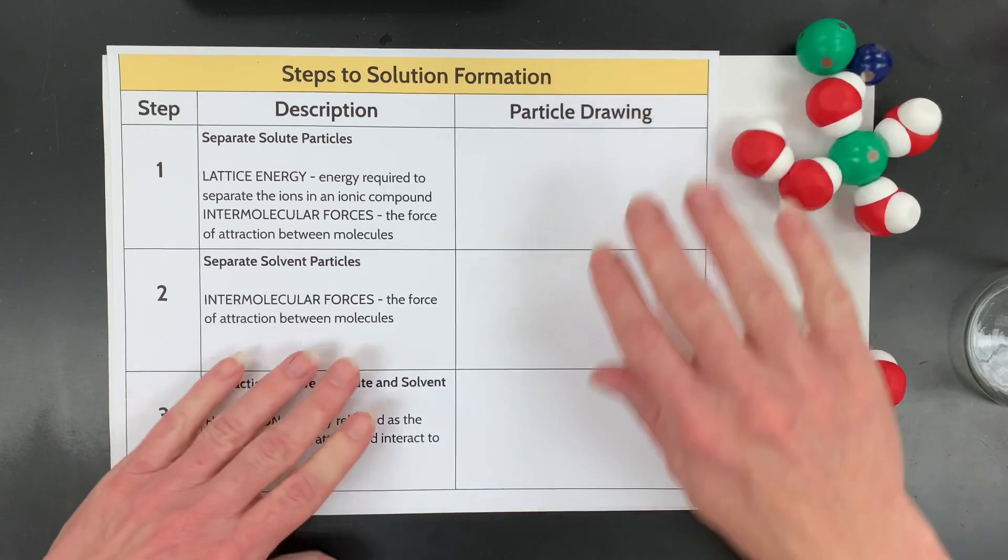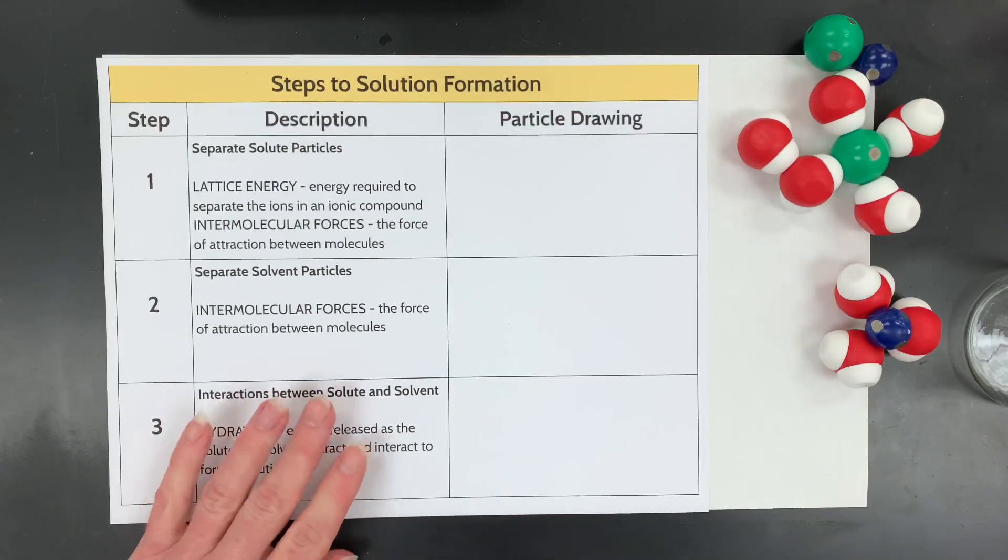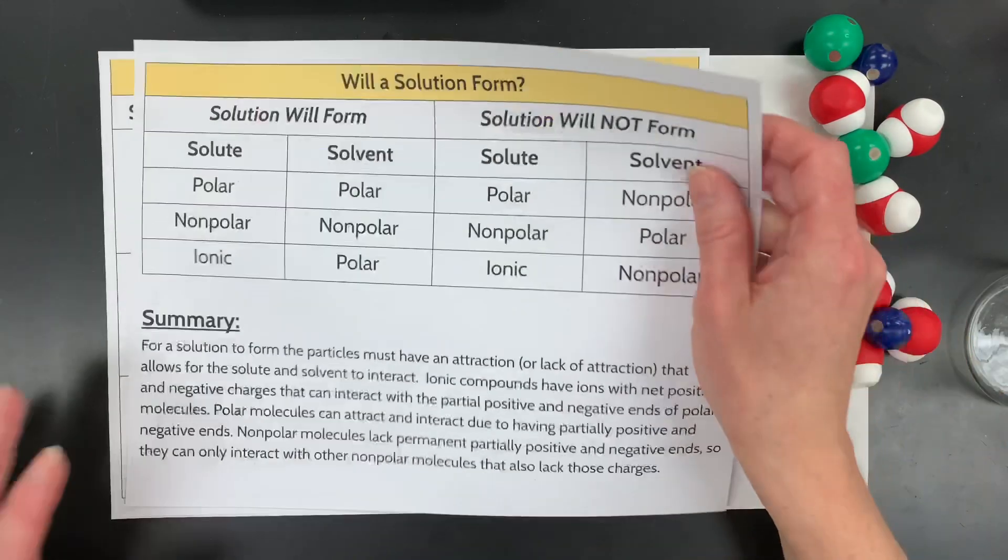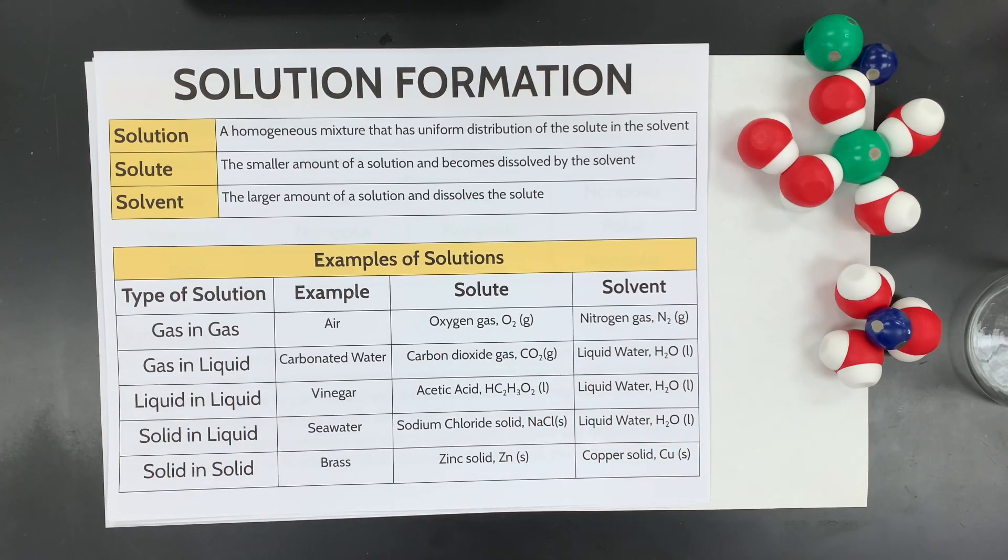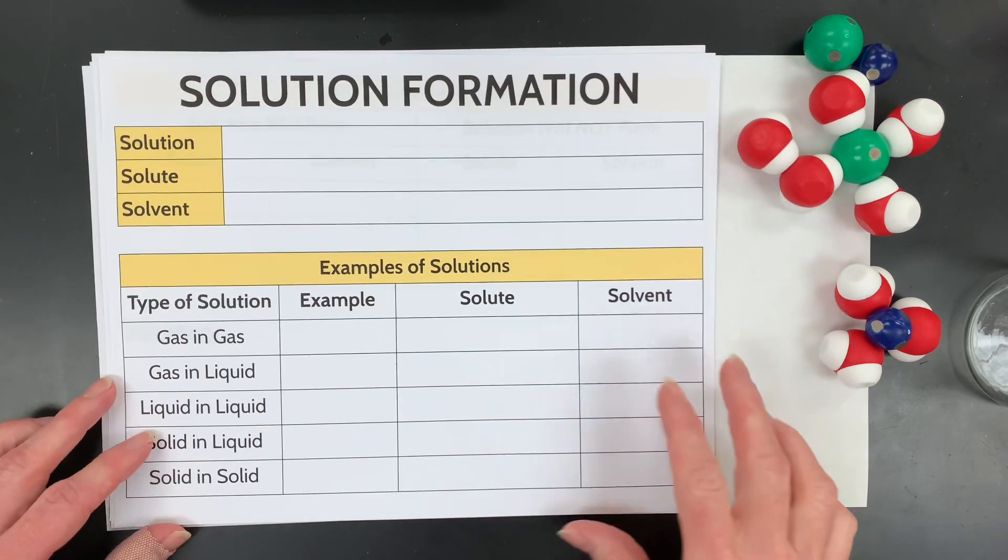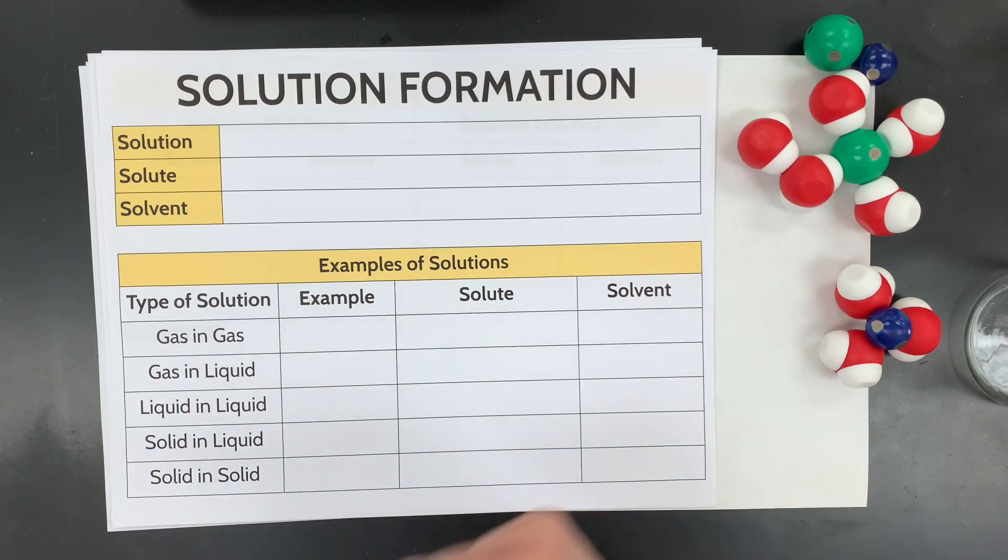So I hope that helped you understand the steps of formation and will it form and kind of how to predict it if you have to, and then solution formation, just some terms and some examples. And if you'd like a copy of these blank set of tables and notes, go to the YouTube description below. They're part of a larger group of notes that go with all the solution videos I have on my YouTube channel. Good luck, chemists.